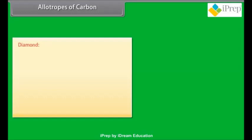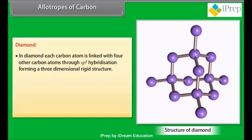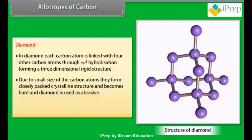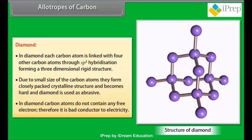Diamond: in diamond, each carbon atom is linked with four other carbon atoms through SP3 hybridization forming three-dimensional rigid structure. Due to small size of the carbon atoms, they form closely packed crystalline structure and becomes hard, and diamond is used as abrasive. In diamond, carbon atoms do not contain any free electron. Therefore, it is a bad conductor to electricity.